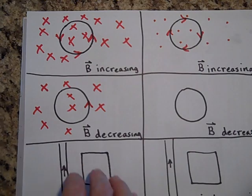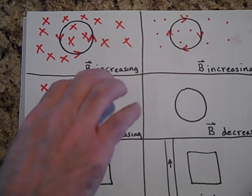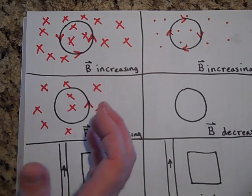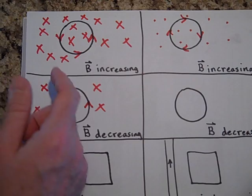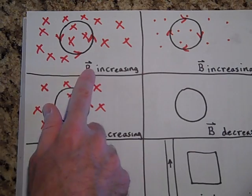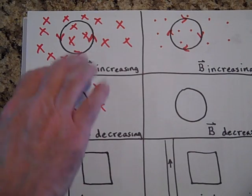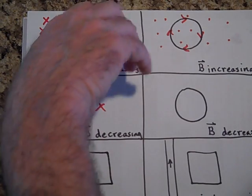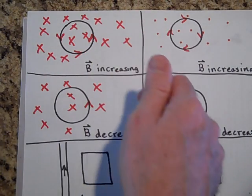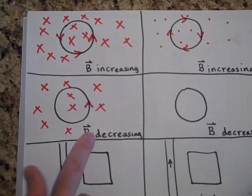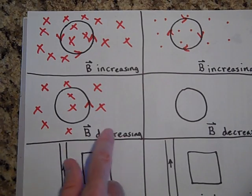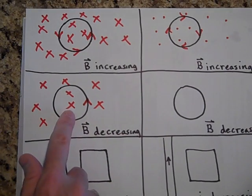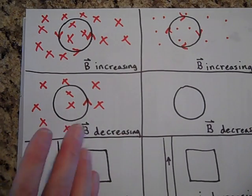Wait — I almost got that wrong. Let me check: B is decreasing here. Because B is decreasing, the x's are decreasing, so it's going to try to make its own x's this time.